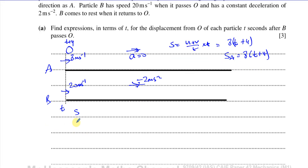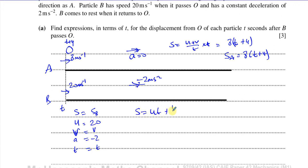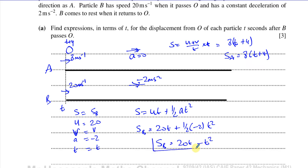For particle B, we use SUVAT. We have SB, initial speed U equals 20, acceleration A equals minus 2, and time T. Using S equals UT plus one-half AT squared, we get SB equals 20T plus one-half times negative 2 times T squared. So SB equals 20T minus T squared.